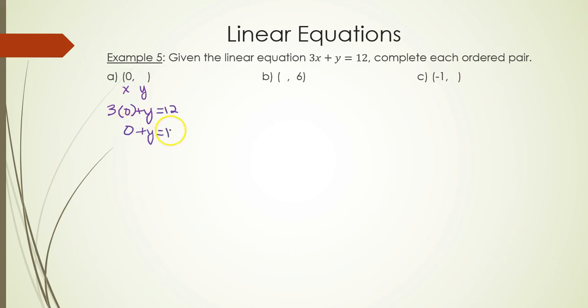0 + y = 12. Guess that means y = 12. (0, 12) is the ordered pair.